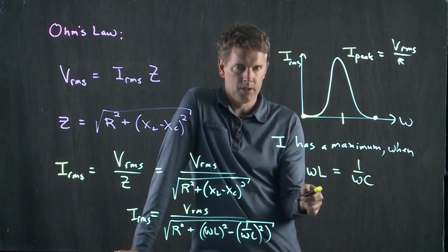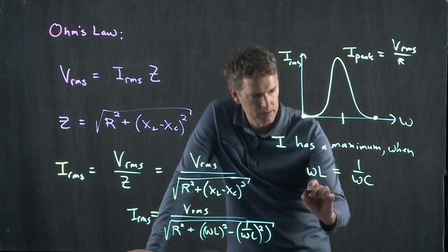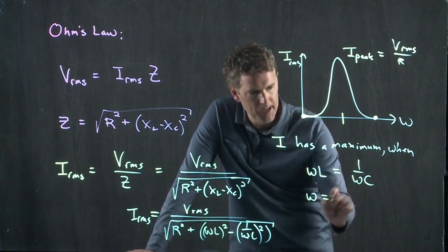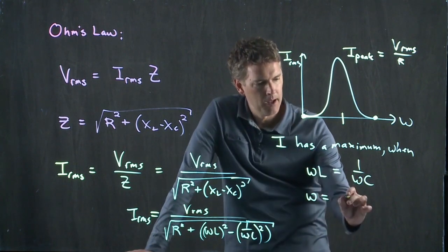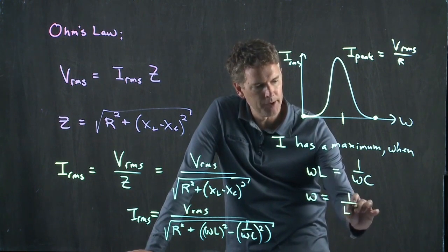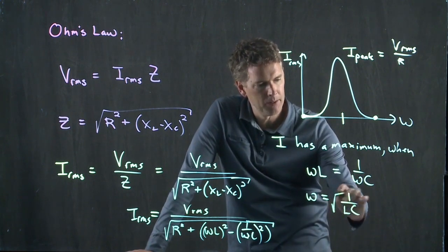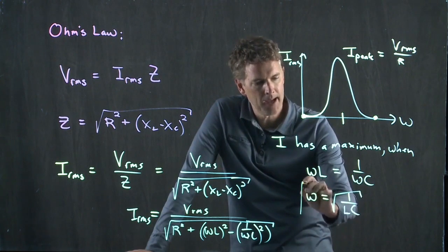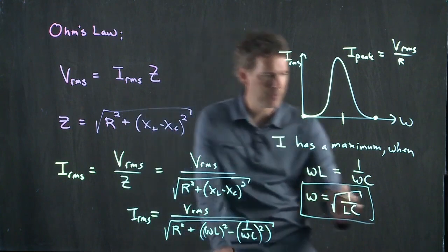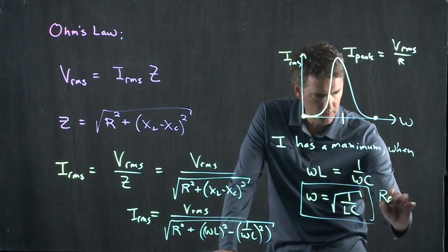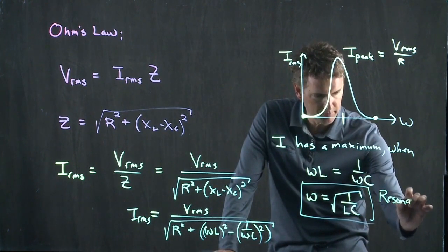What is this condition here? Well, I can rewrite this for omega. What do I get? I multiply across by omega. I get omega squared. I have a one over LC when I divide through by L. And now I have to take the square root. And this is something very special. It is called the resonance frequency.